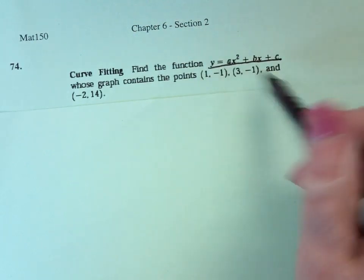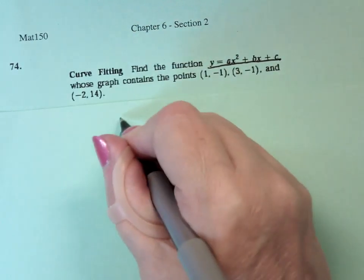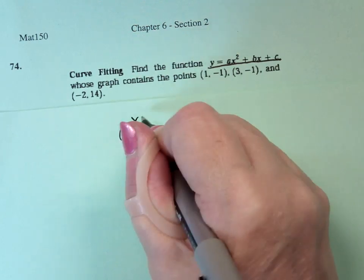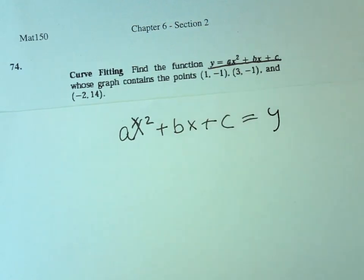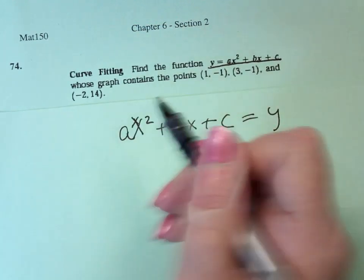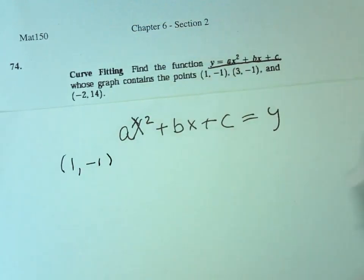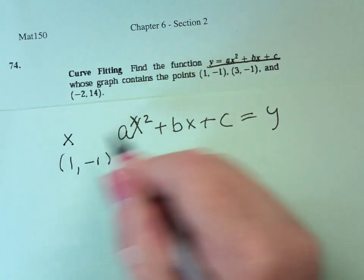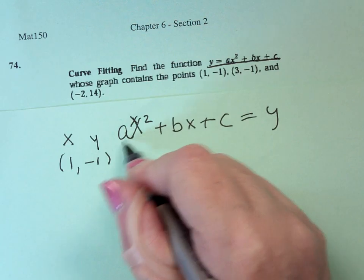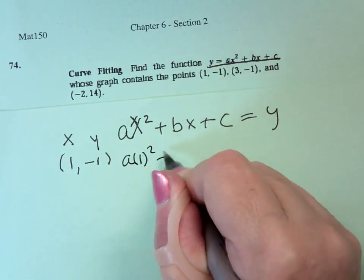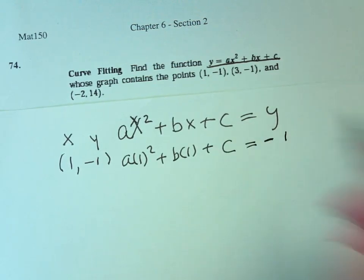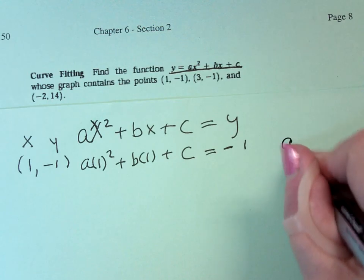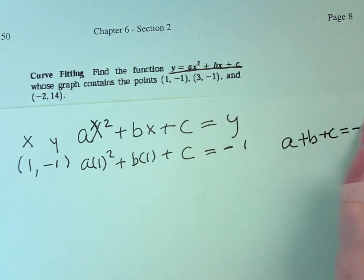So it says I've got three coordinate points, it's going to give me three equations. If I know that ax squared plus bx plus c equals y, I know that if I have a coordinate point 1, negative 1, this says x is 1, y is negative 1, that a times 1 squared plus b times 1 plus c equals negative 1. So this says that a plus b plus c equals negative 1.